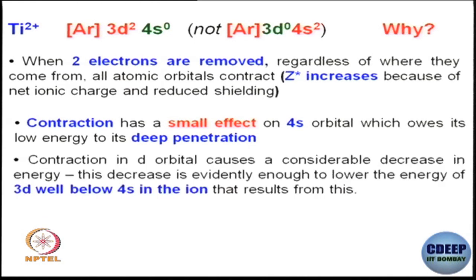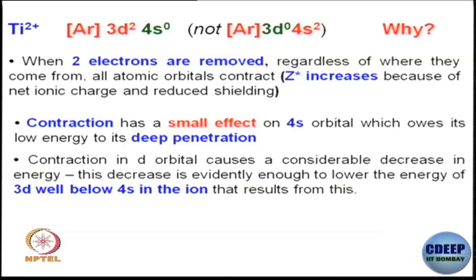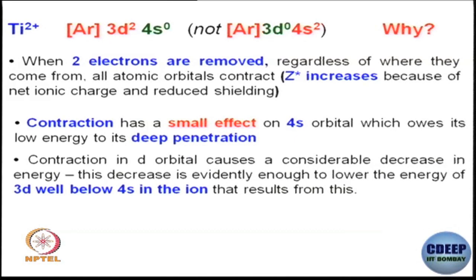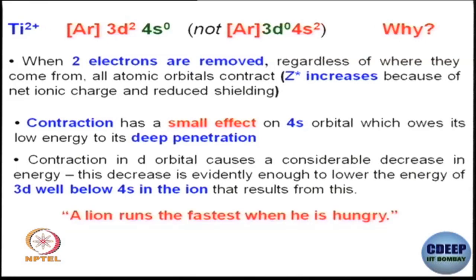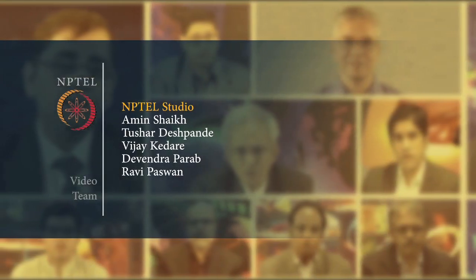To summarize: contraction in the d orbital causes a considerable decrease in energy. This decrease is enough to lower the energy of 3d well below 4s in the resulting ion. Therefore, the removal of electrons from 4s will be easier compared to 3d electrons.